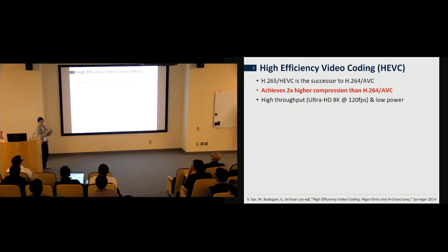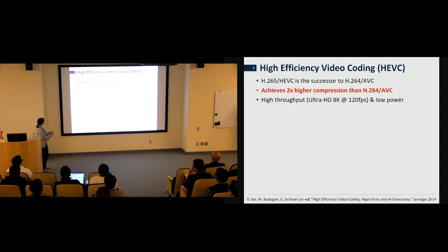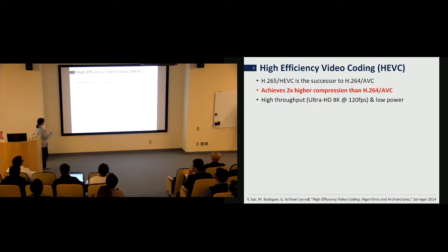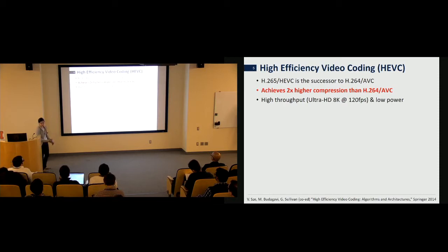I'll start at the beginning of my research career, looking at video coding. You may be familiar with HEVC, also known as H.265 — the successor to H.264, which is widely used to compress video on the internet. This standard was developed around 2010 to 2013, and the goal was to achieve twice the compression of H.264: for the same quality, you take half the number of bits. The target was ultra-HD 8K at 120 frames per second, with lower power consumption.